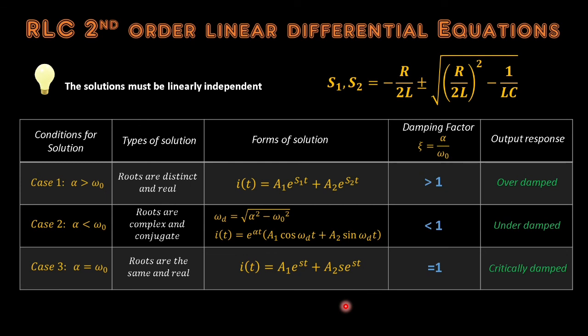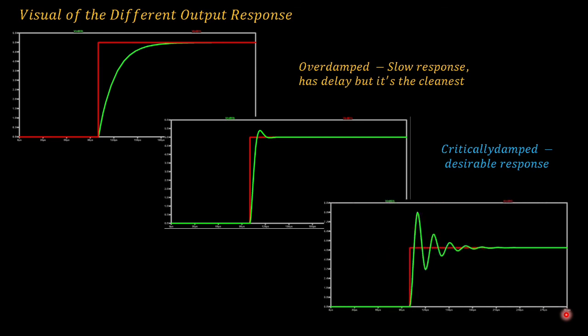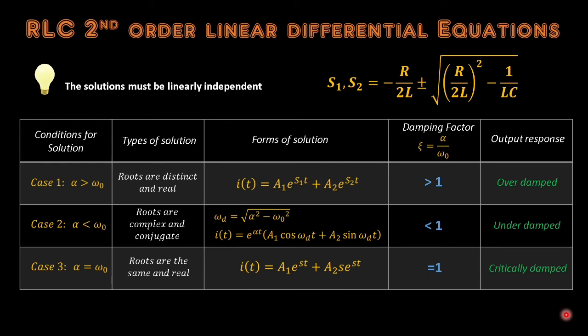These are the things you need to know to solve the RLC second-order linear differential equations for the natural response. In part 2 of this video I will discuss the forced response of the RLC series circuit. I want to end this video by showing how the overdamped, underdamped, and critically damped output responses look, and discussing when each response is desirable in design. Thank you for watching — I hope you learned something and will continue to support Bartronics TV.